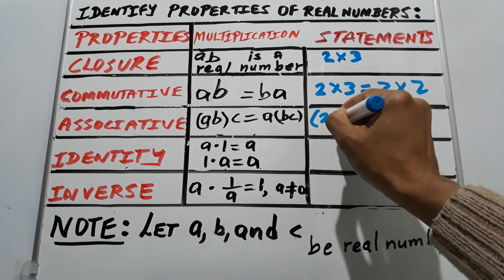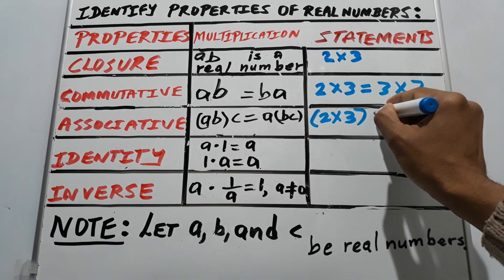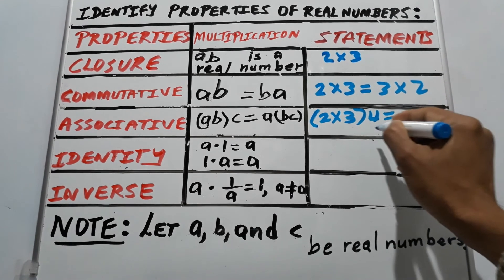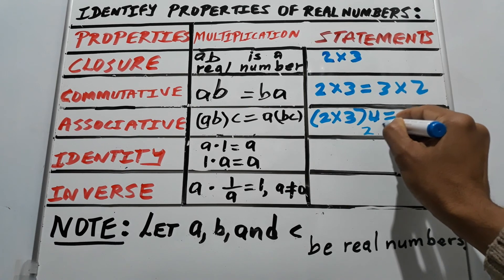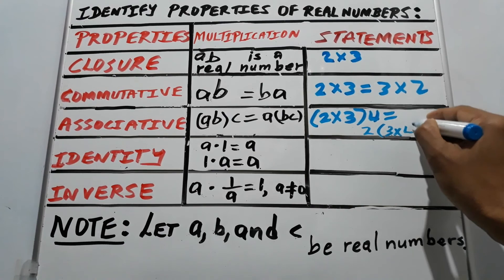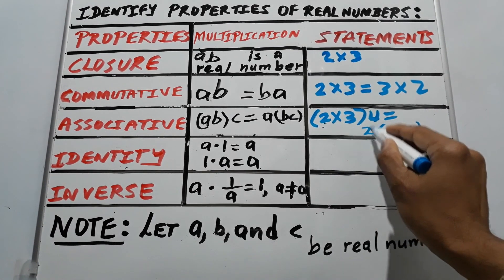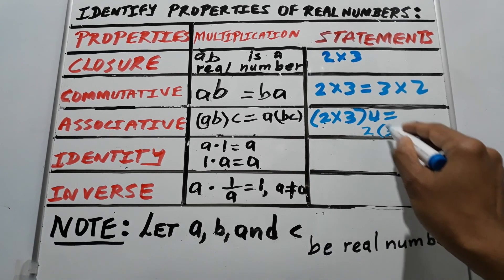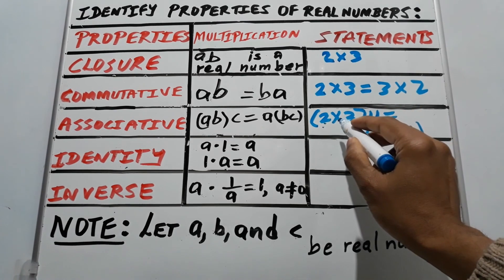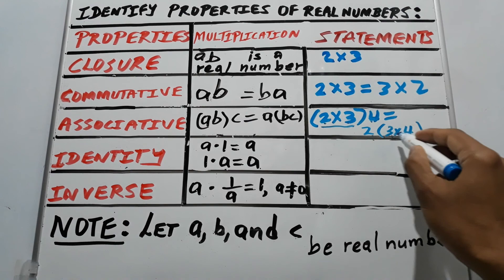Two times three close parenthesis times four is the same as two open parenthesis three times four. Same order: two, three, then four. Order matters but different grouping, two times three, three times four.